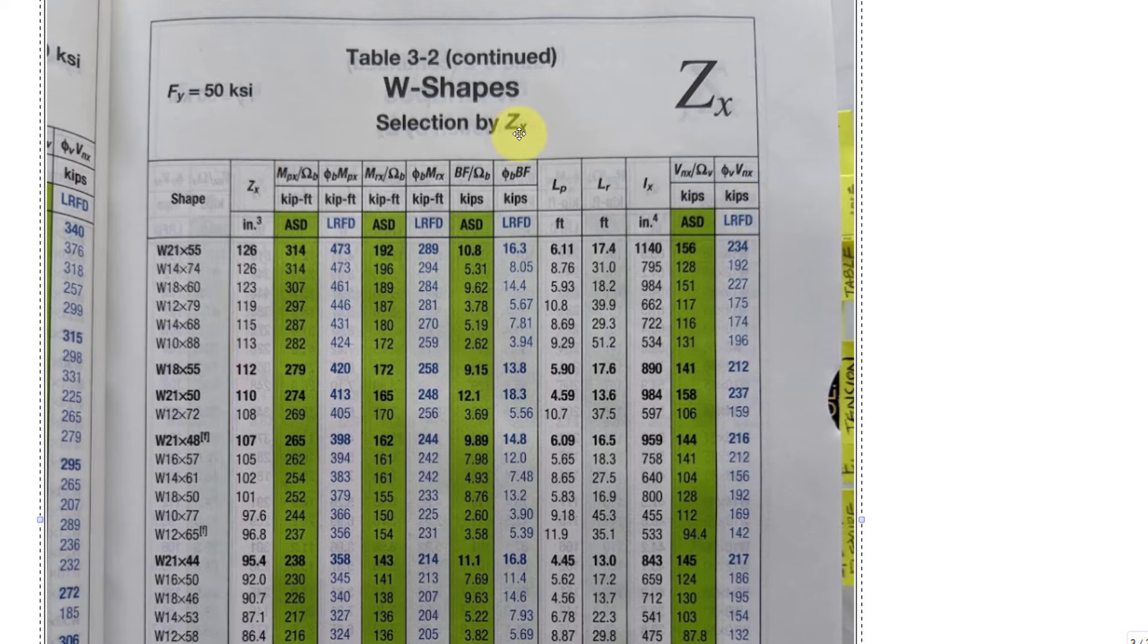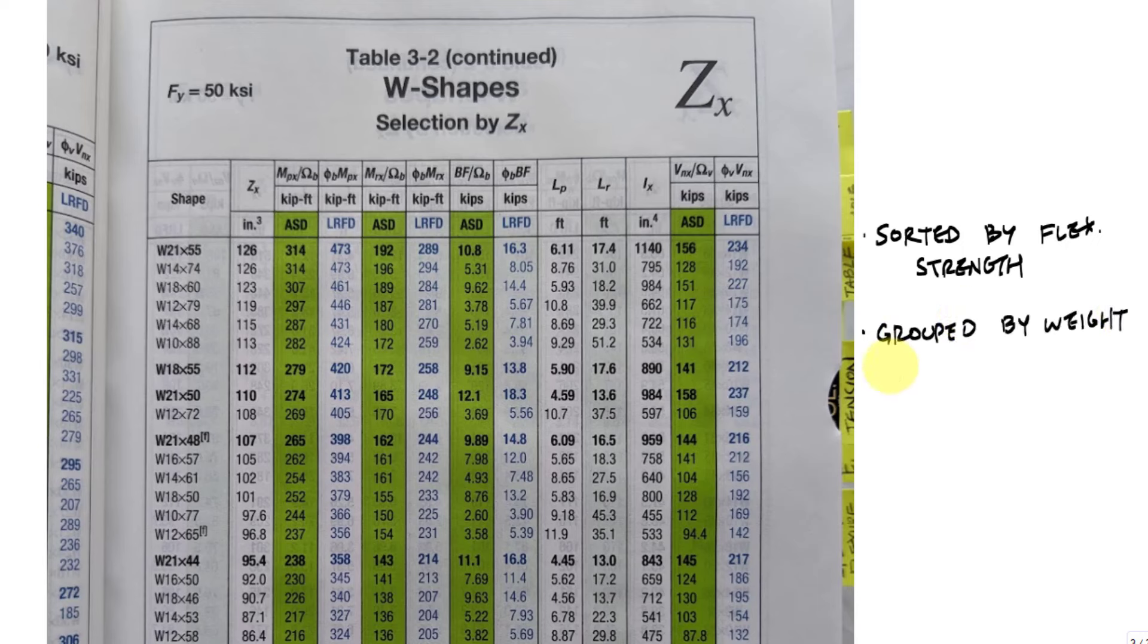For 50 KSI steel, I have a bunch of shapes. They are sorted by flexural strength and grouped by weight with the lightest shape in the group in bold. If I need 119 inches cubed, but I see that if I choose a W21 by 55 instead, I'm going to get a better moment capacity, a higher plastic section modulus and lighter. So it's like stronger, lighter, faster, better, faster, stronger.